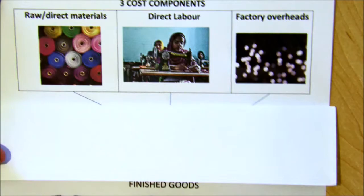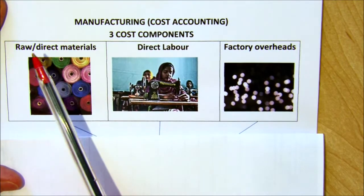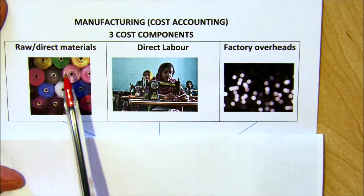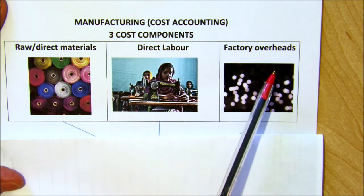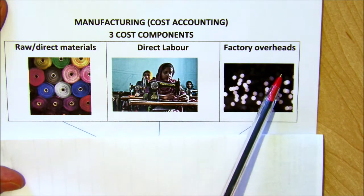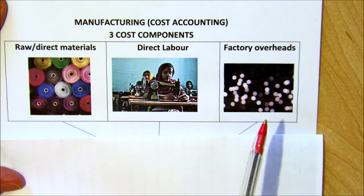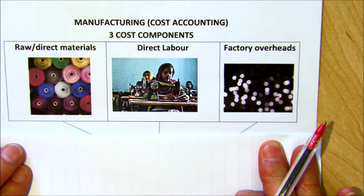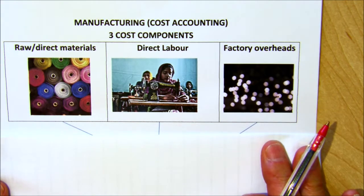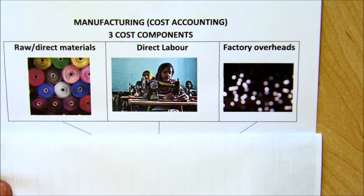So in grade 10, you're largely going to be working with figures, calculating the cost of these three things, and then adding them together to get the total cost, and dividing by the number of units made to get a unit cost.